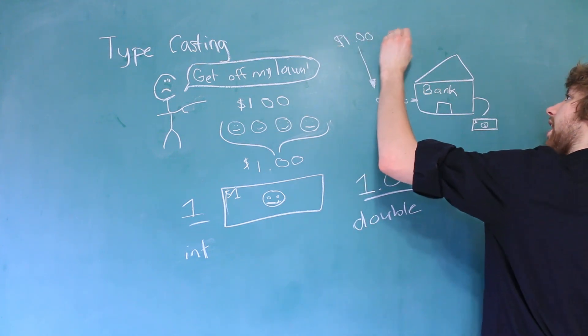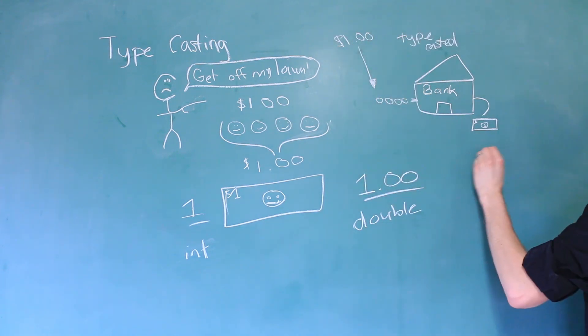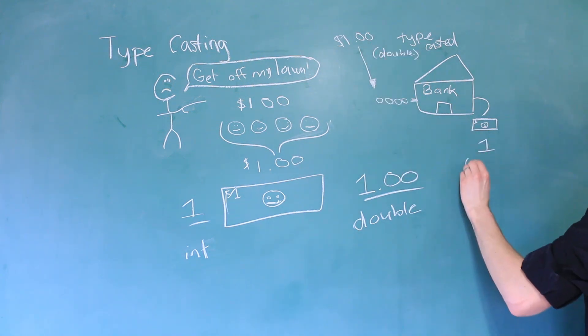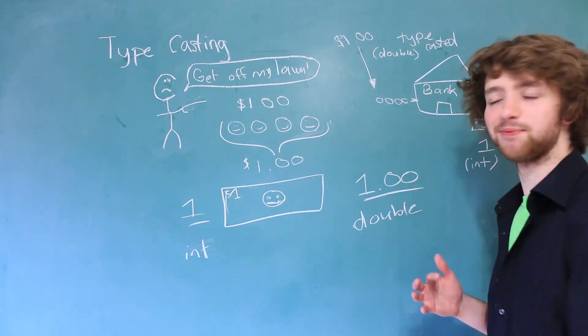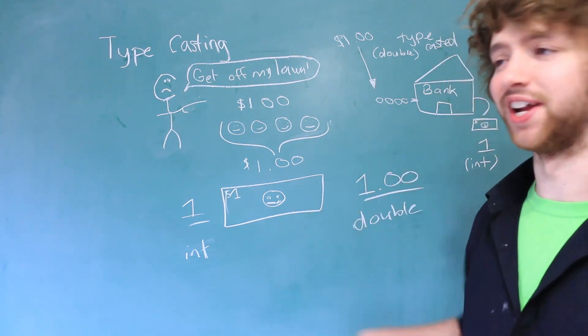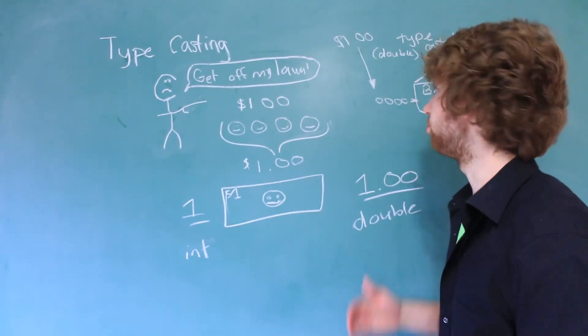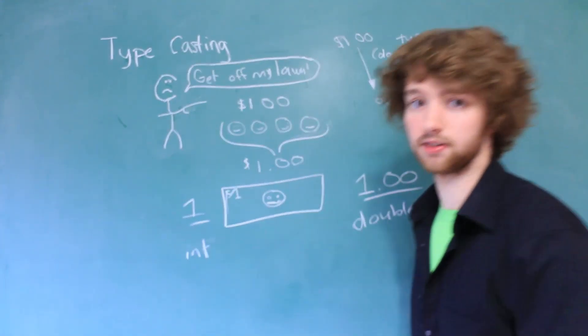In computer science terms, you could say that your dollar was typecasted to a dollar and this one being of a double data type to an integer data type. You probably could have gone without the story, but the moral of the story is that C is very picky when it comes to data types, so we often need to typecast things.